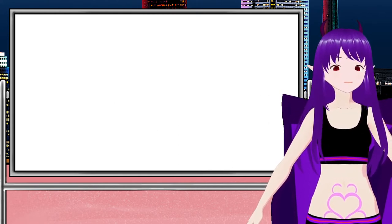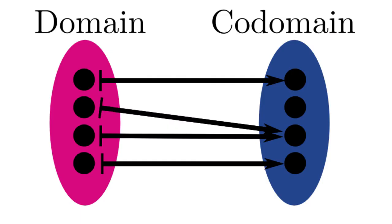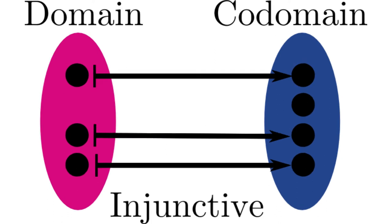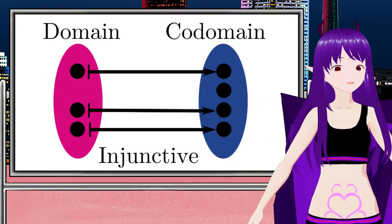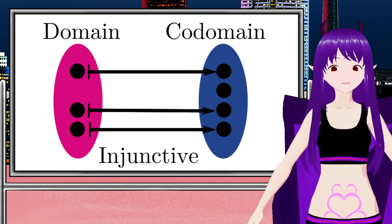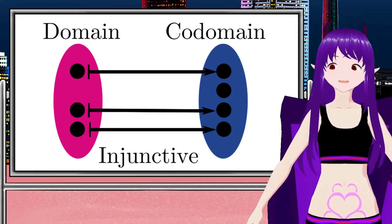Functions are allowed to have two different inputs go to the same output. But if we have a special function where every input goes to a different output value, we call that an injective function. The way I remember this term is that the domain is injected into the codomain.